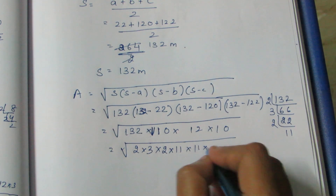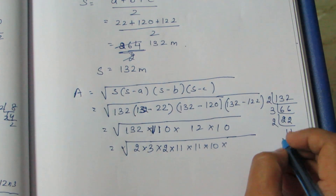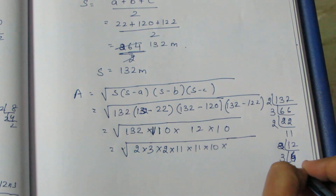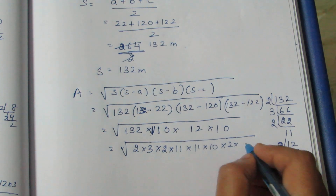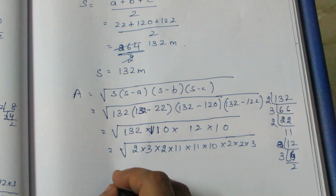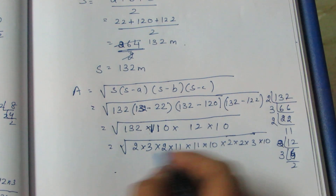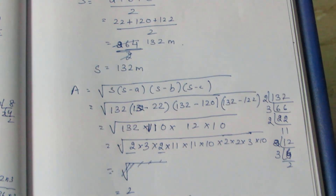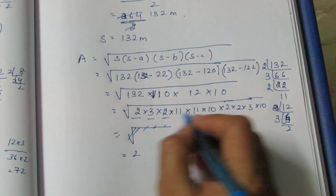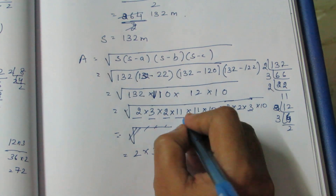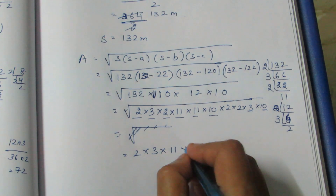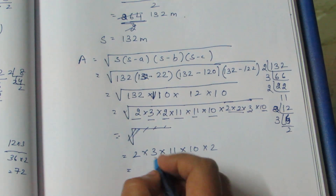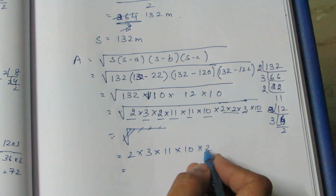110 equals 11 into 10. And 12 equals 4 into 3, where 12 is 2 into 6, then 2 into 3 — so 12 equals 2 into 2 into 3. Now taking the root, we pair the factors: two 2s make one 2, giving us 2 into 3 into 11 into 10. That is 12 into 11, which is 132.